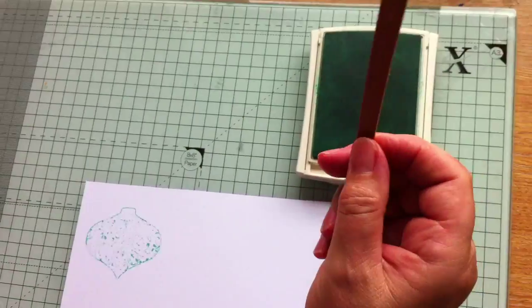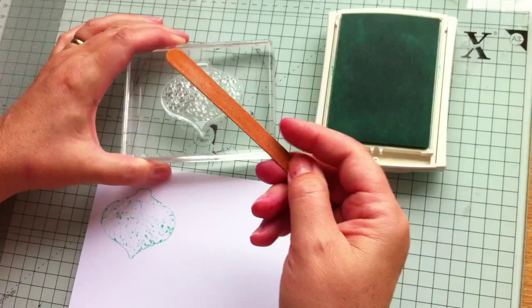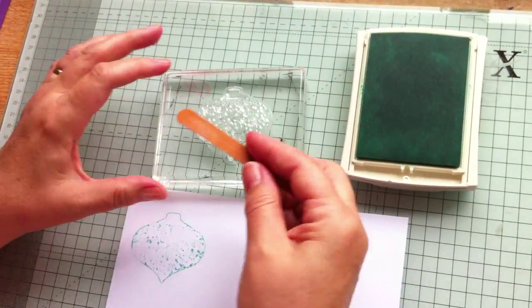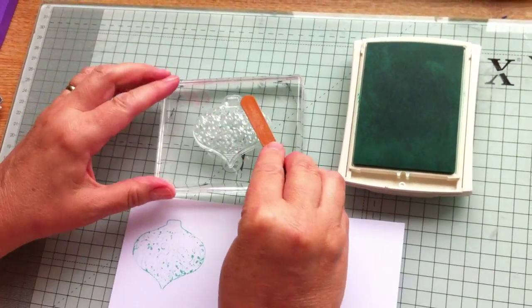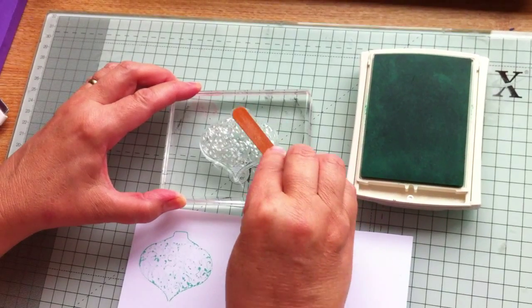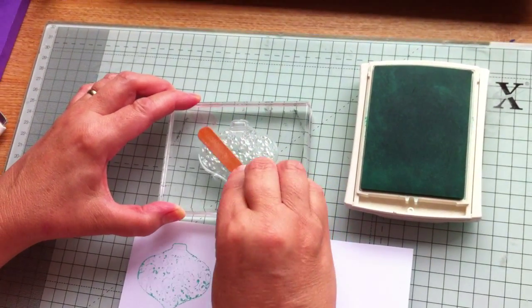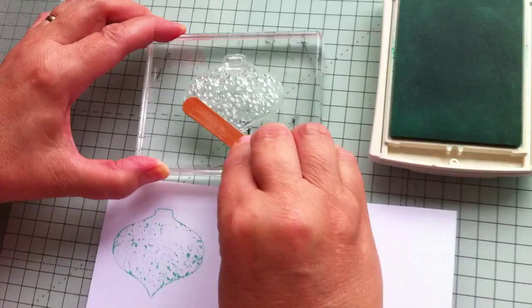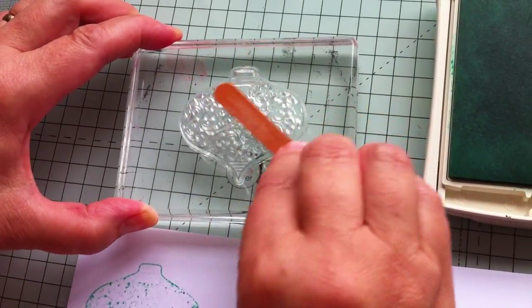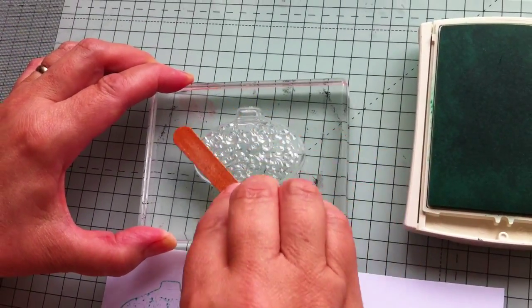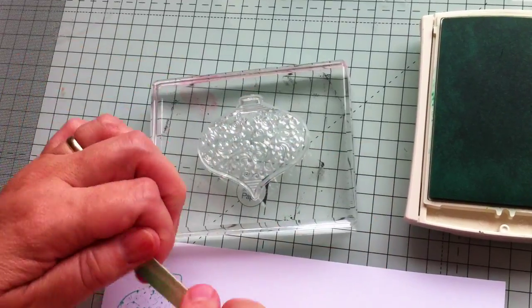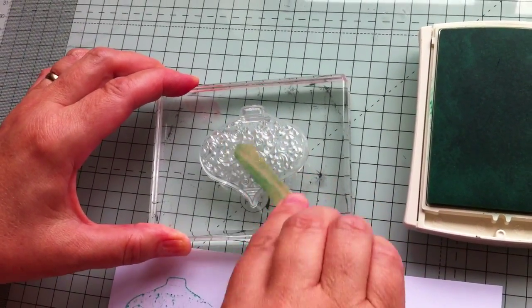So what you need to do is take a nail file, and what you're going to do is very gently rub over the top of the stamp. What you're doing is conditioning the stamp ready to take the ink. This is just going to take that fine coating off the top of the stamp, and then you should be able to get yourself a better impression.